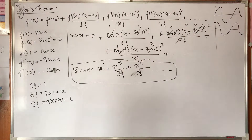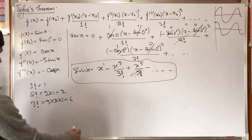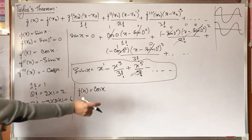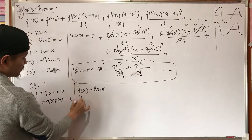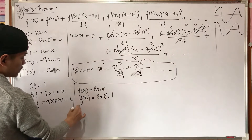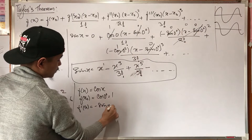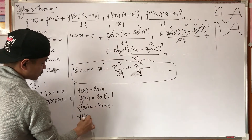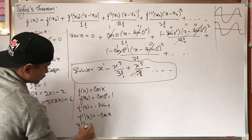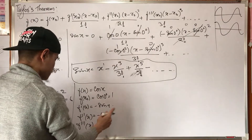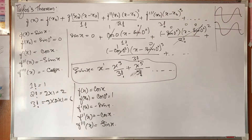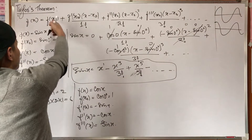If you have a function, you can use cos x. If you have a function of cos x, cos(0 degrees) is going to be 1. We can differentiate: the first derivative is minus sin x, the second is minus cos x, the third derivative is minus sin x again.